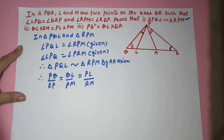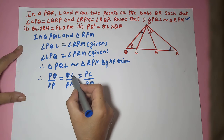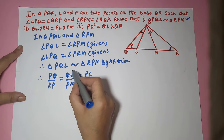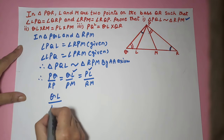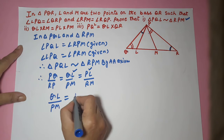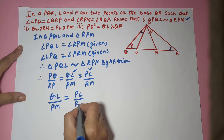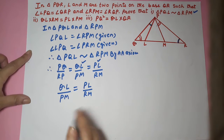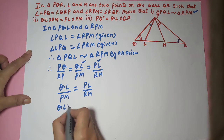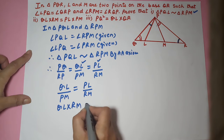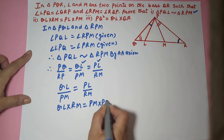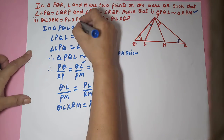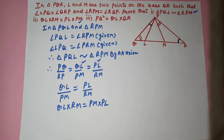Now for the second part: we need to prove QL × RM = PM × PL. Taking QL/PM = PL/RM from the proportionality, if I cross multiply, I get QL × RM = PM × PL, which is what we had to prove.